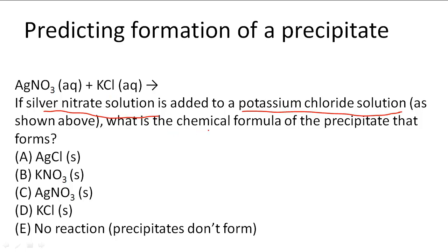What is the chemical formula of the precipitate that forms? This is a double displacement reaction, so actually we're going to have AgCl plus KNO3.